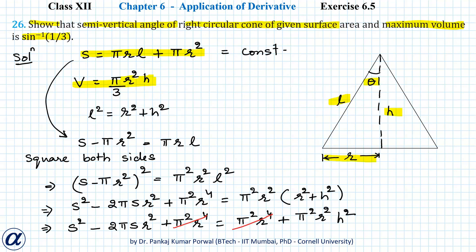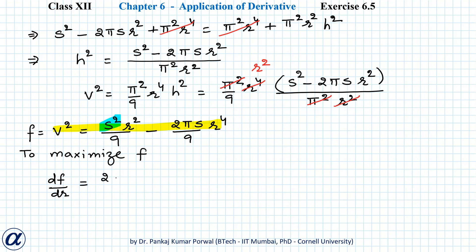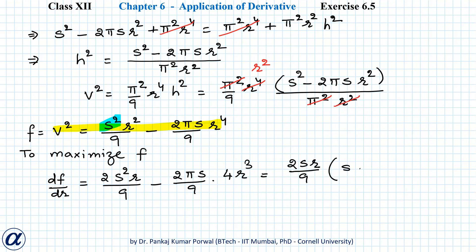Note that we want to maximize V, but we will actually maximize V². Since V is a positive function, the maximum of V and V² occur at the same value of the variable. Let f = V². To maximize f, we set df/dr = 0. The derivative is df/dr = 2S²r/9 − (2πS/9)·4r³. Taking 2Sr/9 common, we get 2Sr/9 · (S − 4πr²) = 0.